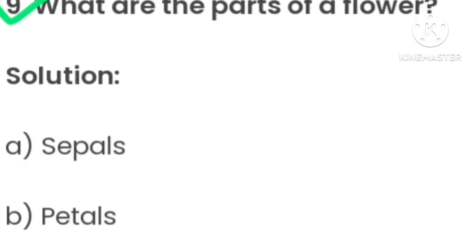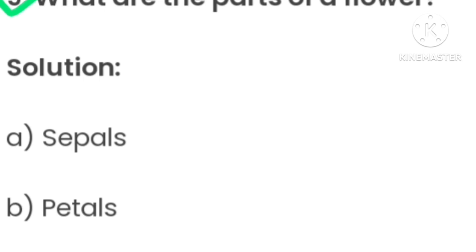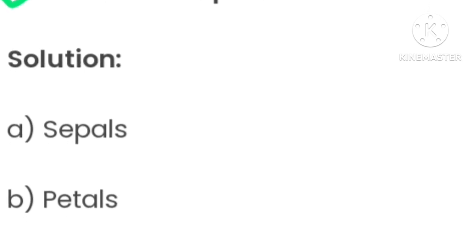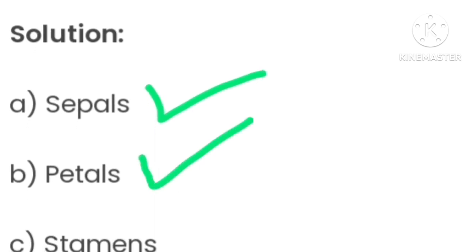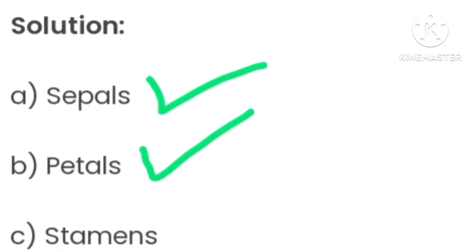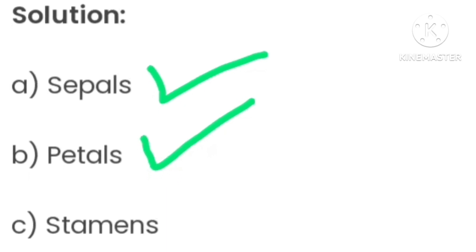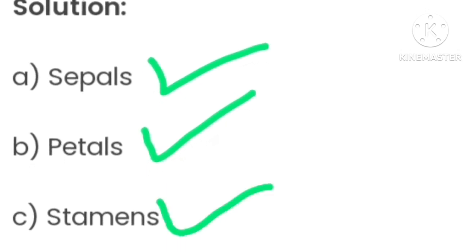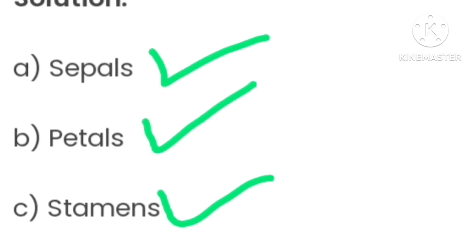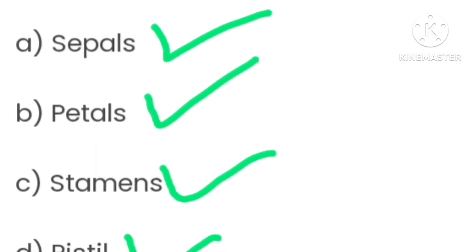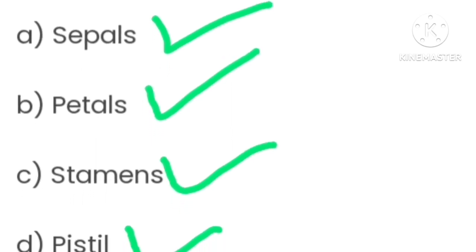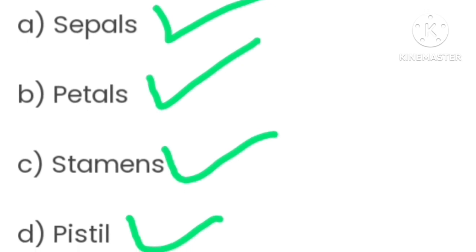Question number nine: What are the parts of a flower? The first part is sepal, which are green colored. Then petals, which are colorful. Then stamen, and pistil. Pistil is a broad part at the bottom of the flower, attached near the sepals, and from it the stamens emerge. These are the four main parts.